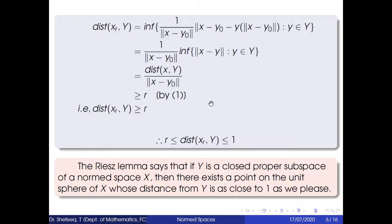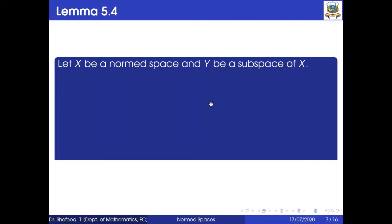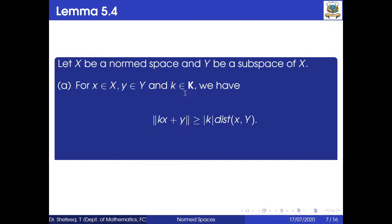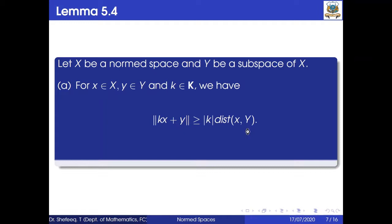Now Lemma 5.4: let X be a normed space and Y be a subspace of X. This lemma has two parts. First part: for x in X, y in Y, and k in 𝕂, we have ‖kx + y‖ ≥ |k| · dist(x, Y).